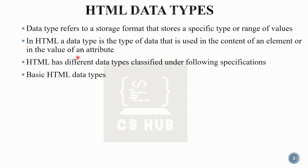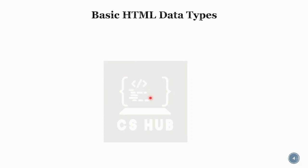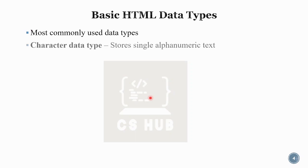We will learn about basic HTML data types. Data types are defined by RFC and IANA, and also by W3C. There are three consortiums: RFC and IANA provide a set of data types, W3C provides a set of data types, and there are also basic HTML data types.